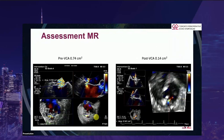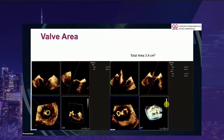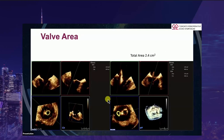Here's assessment of residual MR: this patient had a vena contracta area of 0.74 pre-procedure. After attaching the device pre-deployment, it came down to 0.14 — an excellent result, a clip we're going to accept and release. But before we release, confirm suitable valve area. Here we've moved our blue plane onto the medial orifice measuring 1.2, and then the lateral orifice measuring another 1.2, for a total valve area of 2.4. We're quite happy with this and will let the clip go.